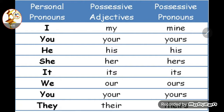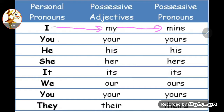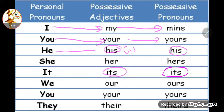Looking at the table: personal pronoun → possessive adjective → possessive pronoun. I → my → mine. You → your → yours. He → his (adjective) → his (pronoun). She → her → hers. It → its → its. We → our → ours. You (plural) → your → yours. They → their → theirs. To distinguish: possessive adjectives are followed by a noun; possessive pronouns are not followed by a noun.